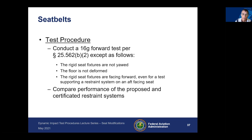The test procedure follows the 16G forward test described in 25.562. Some differences are that your seat fixtures are not yawed, so you can keep them completely longitudinal. Because it's rigid, you will not deform the floor. These are rigid seats facing forward, even for a test supporting a restraint system on an aft-facing seat.